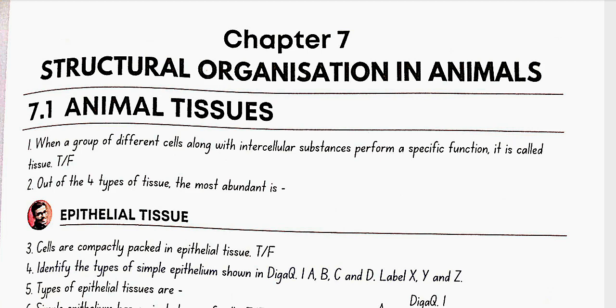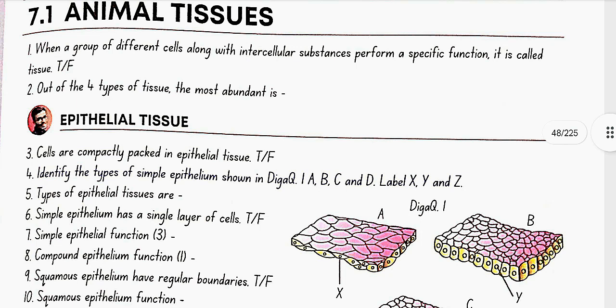No, this is false. A group of similar cells, not different cells. Out of 4 types of tissue, the most abundant is connective tissue.